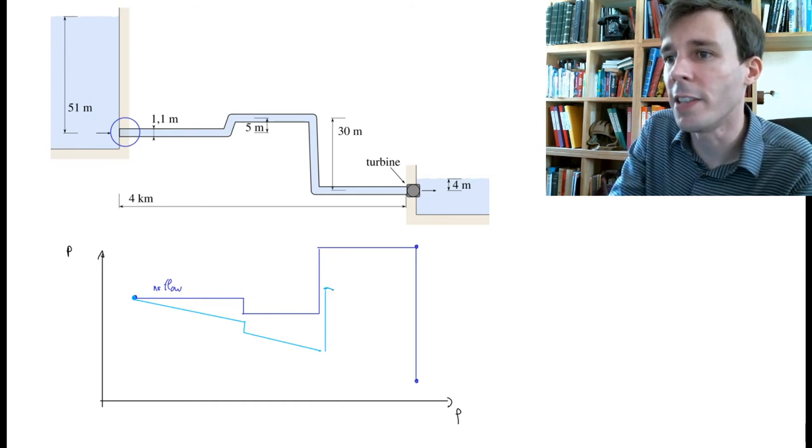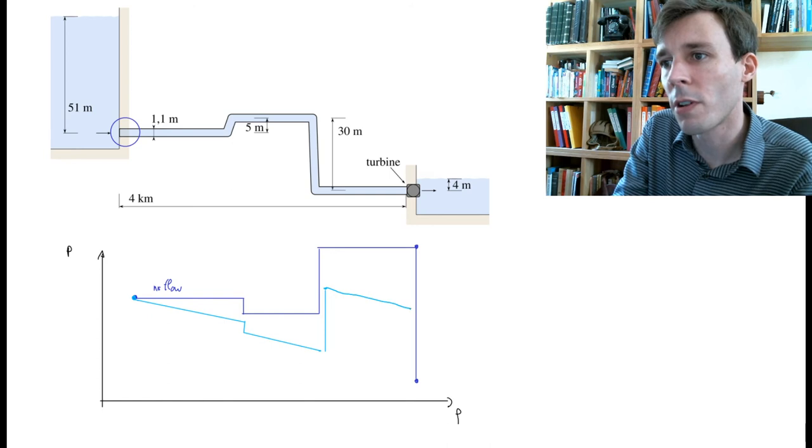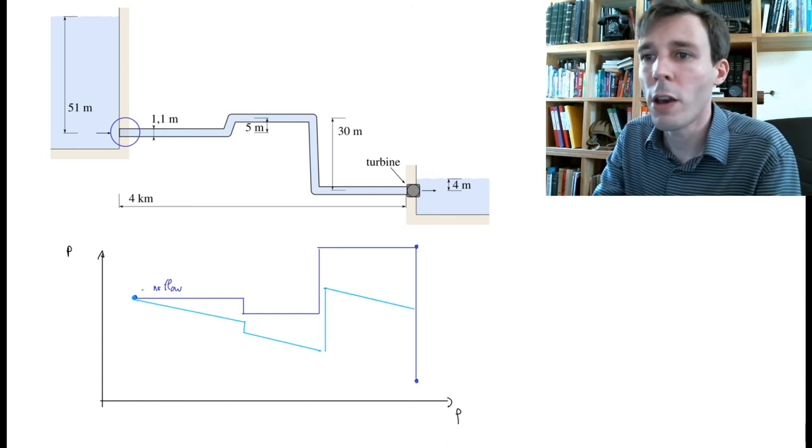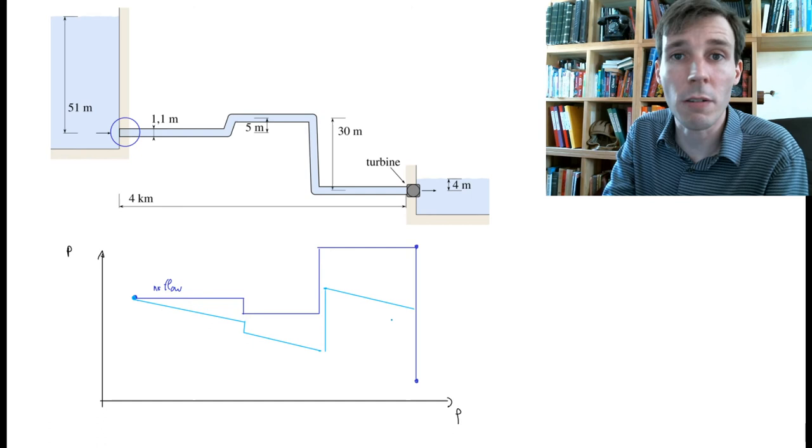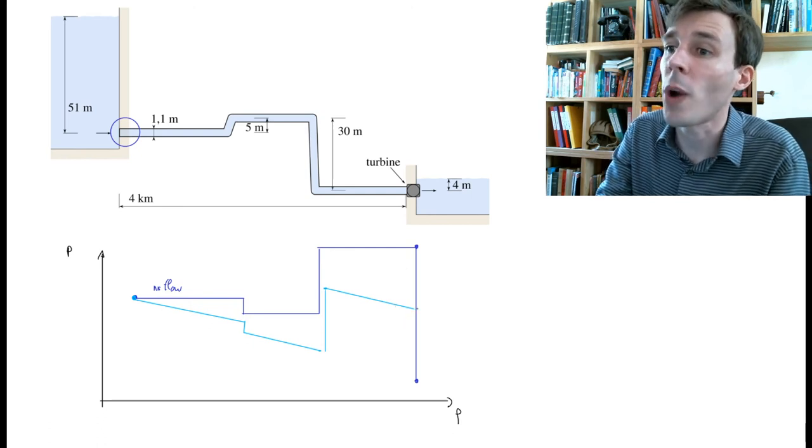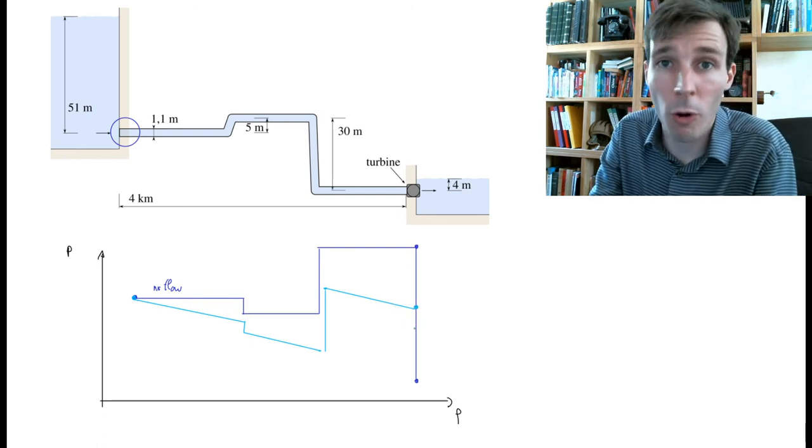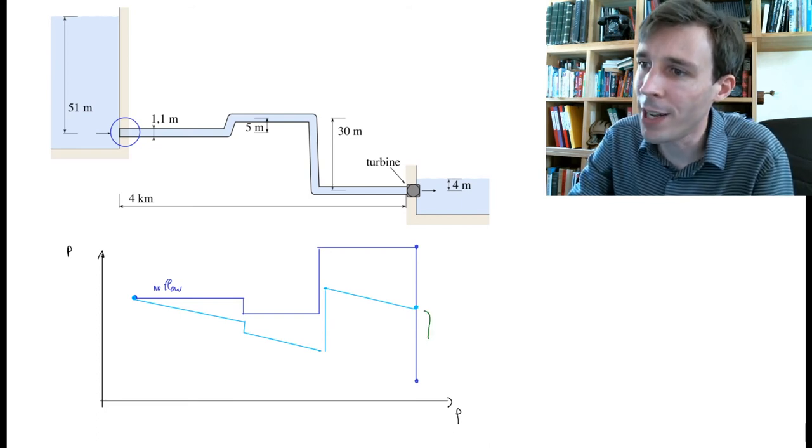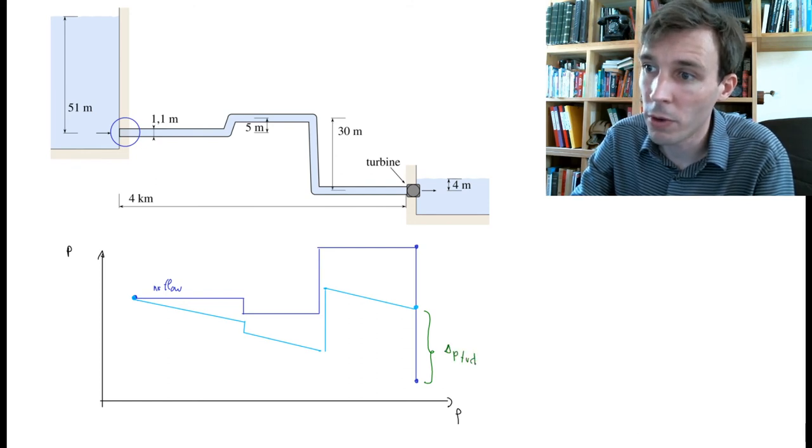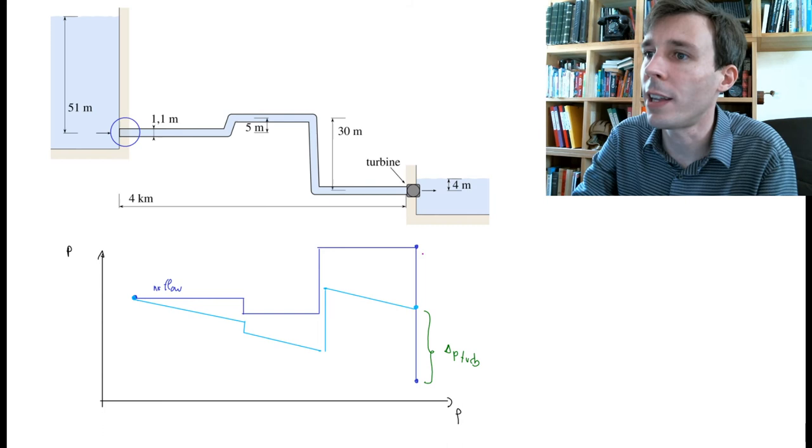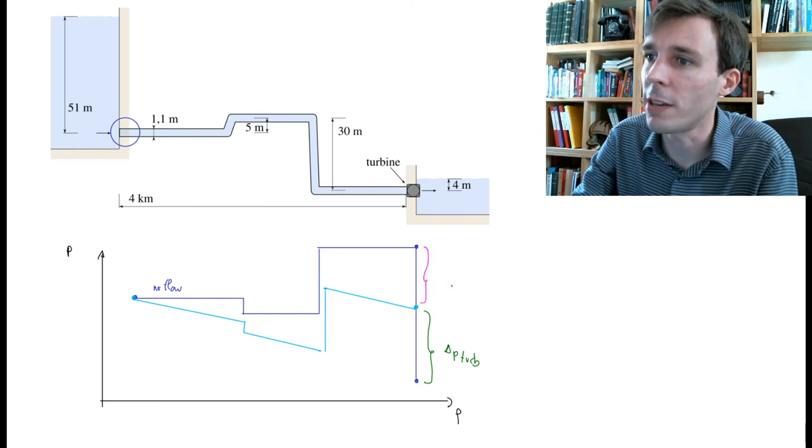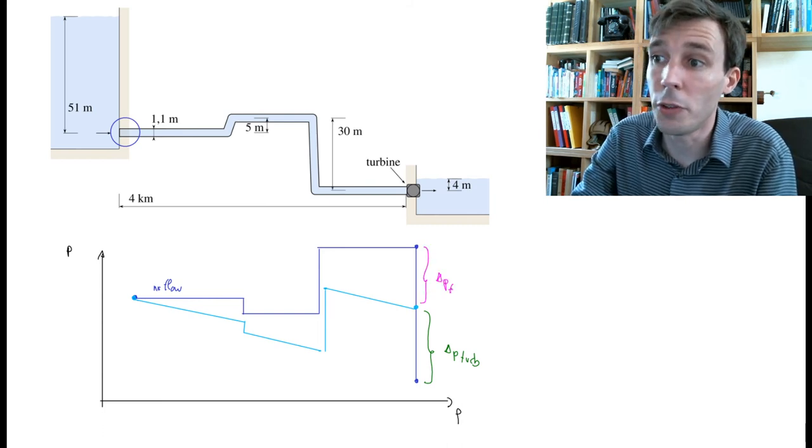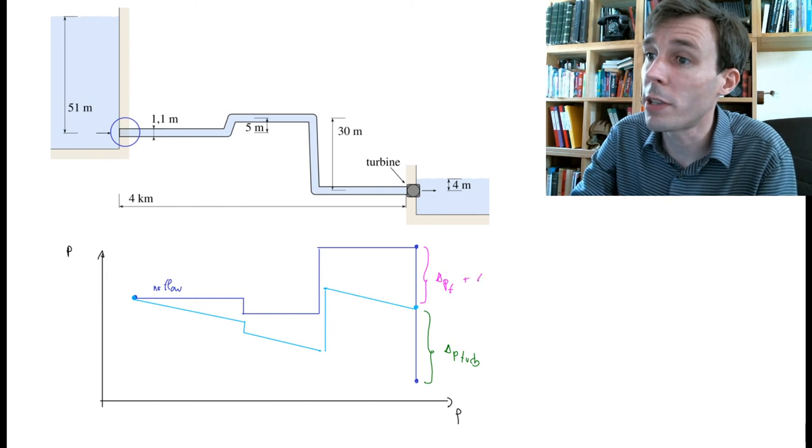And then again here, I decrease the pressure along the length. The slope of these three segments should be the same, and I arrive here at a lower pressure. So now the delta P that I have available to the turbine is less than before. And this delta P that I have here is the delta P due to the friction losses plus the delta P due to the bends.